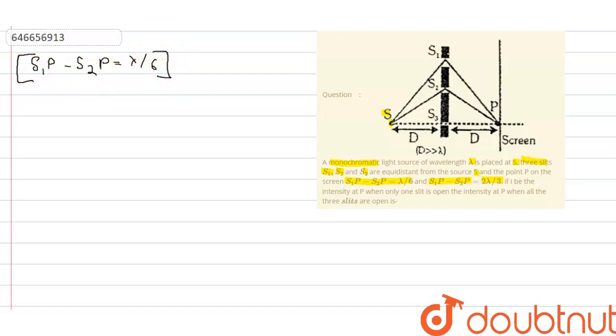For the equation S1P minus S2P equals lambda by 6, we can find the phase difference of S1 and S2, which equals lambda by 6 into 2π by lambda, which comes out to be π by 3.